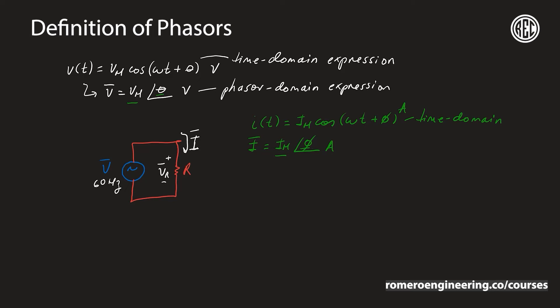Let's look at an example. Let's say that this voltage source V of t is of the form 18 sine of 377t plus 30 degrees, in volts. Then we can say that the phasor domain equivalent of that would be V equal to 18 at an angle of positive 30 degrees, also in volts.